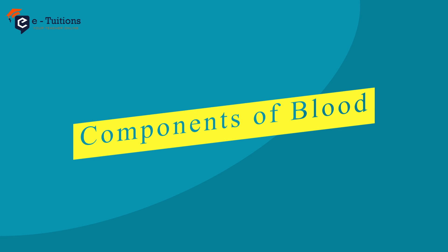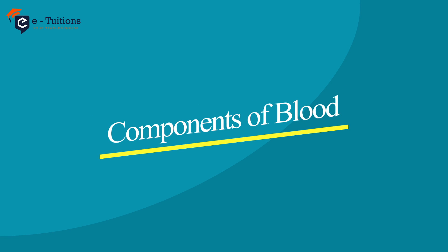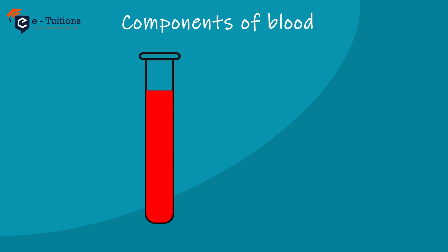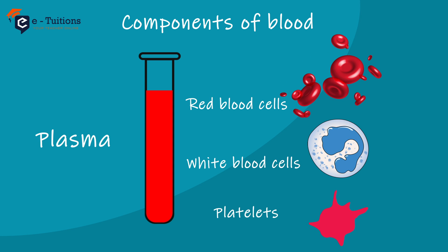Let's see components of blood. There are four basic components of blood: red blood cells, white blood cells, plasma and platelets.